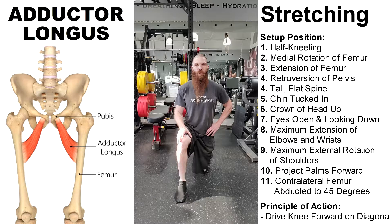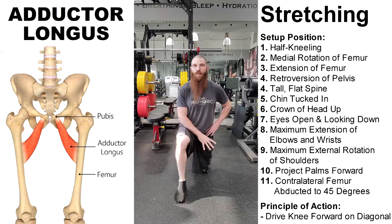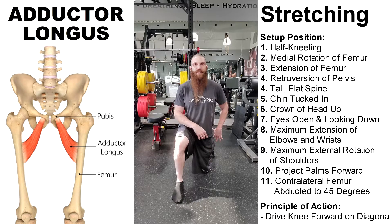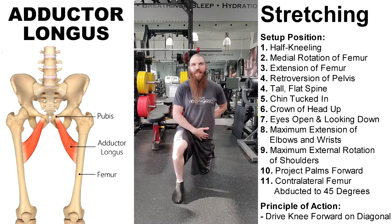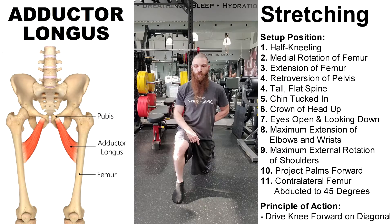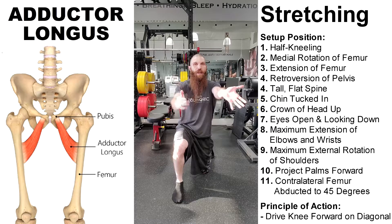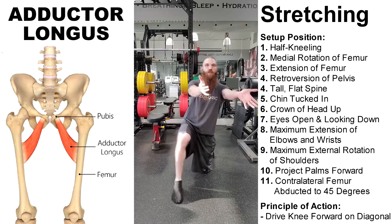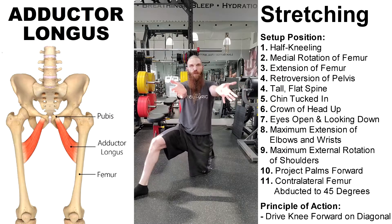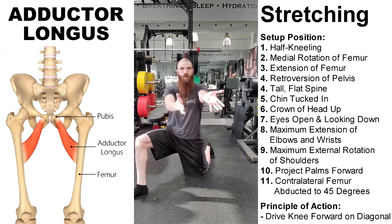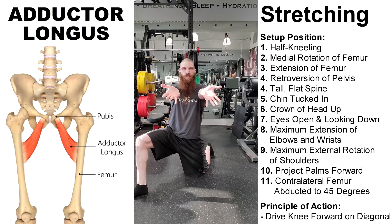We're going to take you through a myofascial stretching exercise for the adductor longus. We're going to be in a half-kneeling position, and whatever knee is on the ground, that's going to be the adductor longus that we're stretching. We want to start by going into medial rotation of the femur by taking the ankle outside of the knee. Then we're going to go into extension of the femur by driving the pelvis forward. We want to maintain a retroversion of the pelvis — flat lumbar spine, flat thoracic, chin is tucked in, the crown of the head is pushing up toward the sky. To put the dura mater under tension with the arms: maximum extension of elbow and wrist, maximum external rotation of the shoulder, project the palm forward. Then with the contralateral leg, we want to abduct 45 degrees and place the foot outside. The principle of action: we drive our knee forward on a 45-degree angle to get maximum myofascial tension on the adductor longus that we are stretching.